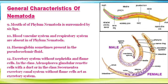The mouth of phylum Nematoda is surrounded by thick lips. The blood vascular system and respiratory system are absent. Hemoglobin is sometimes present in the pseudocoelomic fluid. The excretory system lacks nephridia and flame cells. In class Adenophorea, glandular renette cells with a duct, and in other classes, tubular systems without flame cells act as excretory organs.